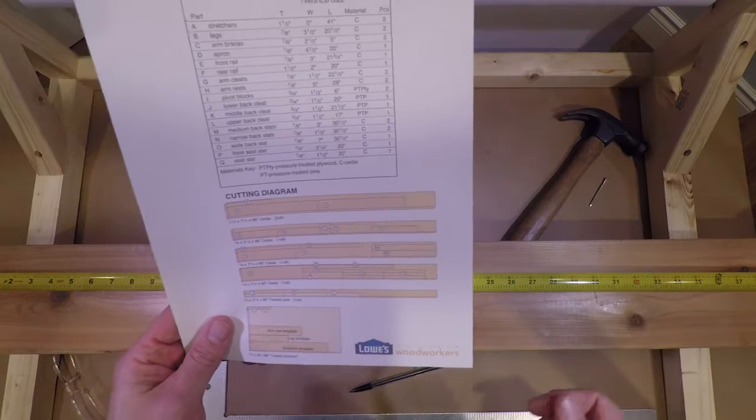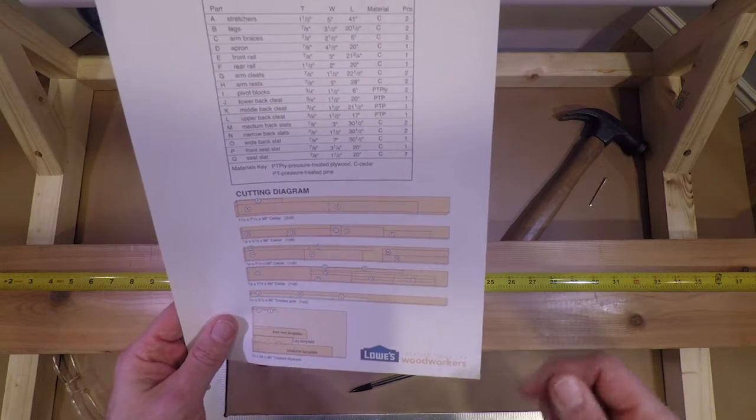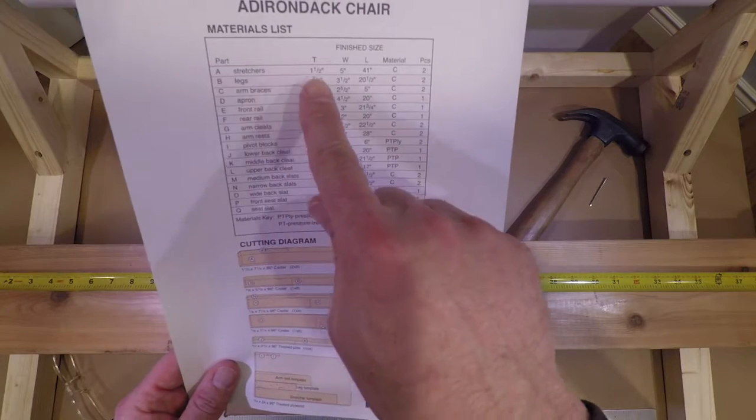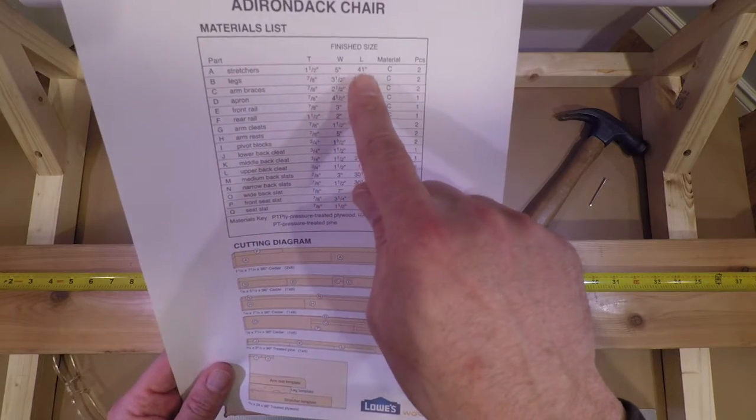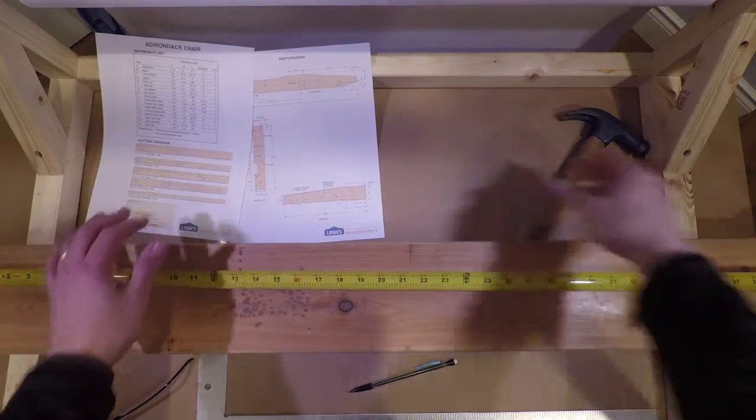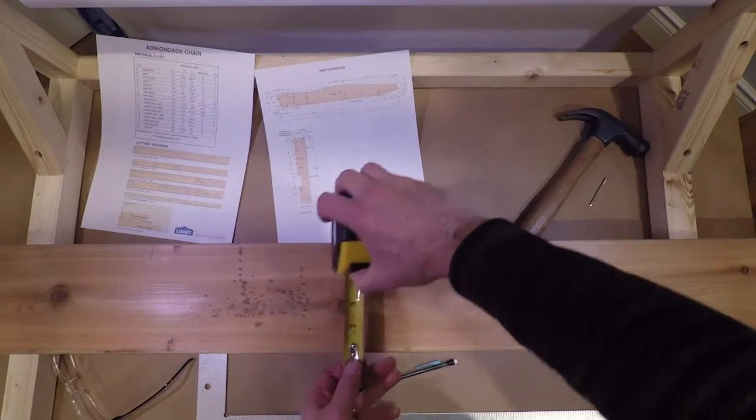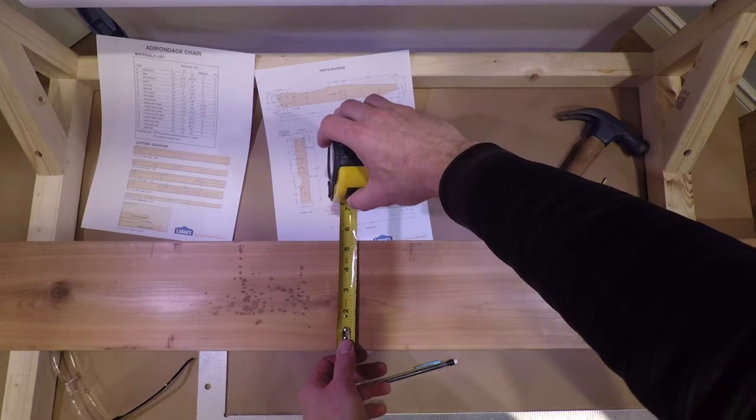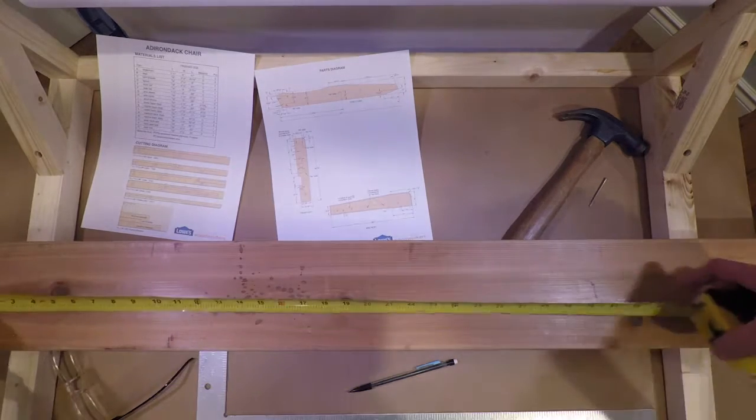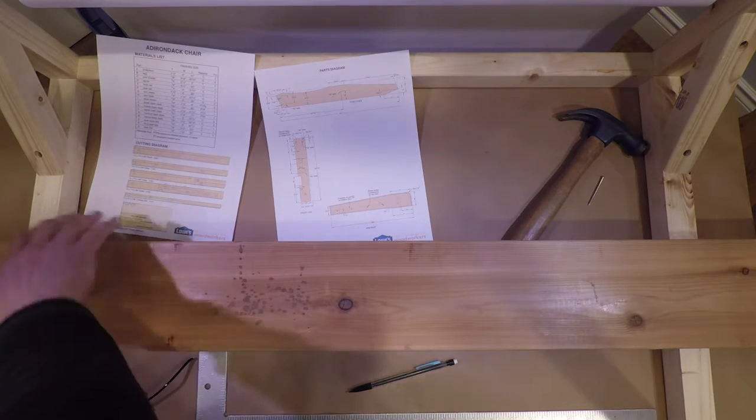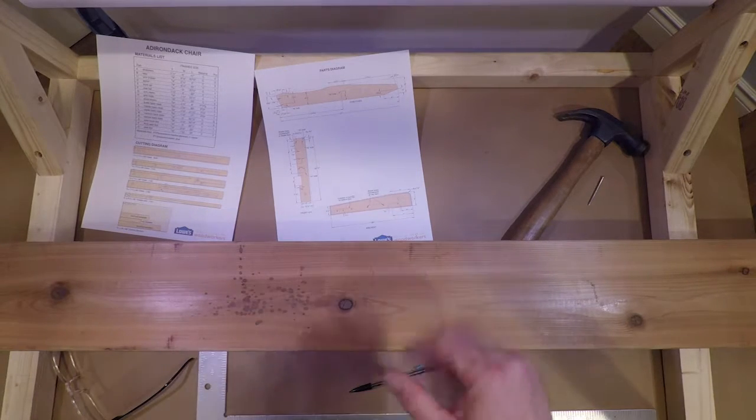What almost every plan comes with is a cut list or cutting diagram and what we want to show is the stretcher which is 5 inches by 41 inches. So we have a board that's approximately that, I think we have 5 3/8ths by about 41. So we're just going to call it roughly and then base our measurements off top and bottom even though they're not going to be precise.